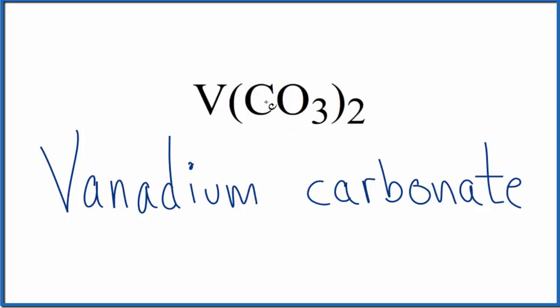So at this point, the name for V(CO₃)₂ is vanadium carbonate. But we said vanadium is a transition metal. So we need to figure out the oxidation number on the vanadium and write that in the name.